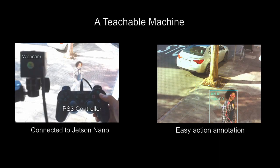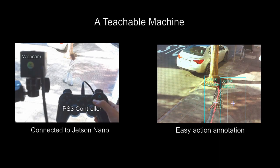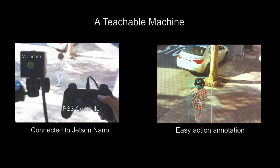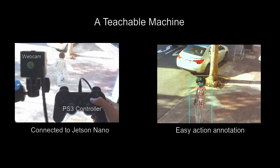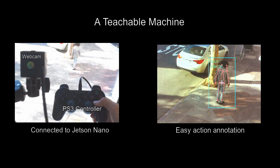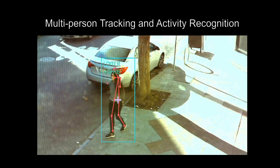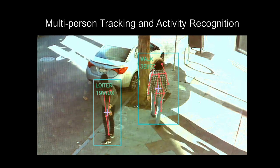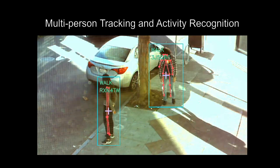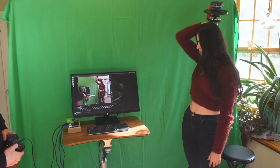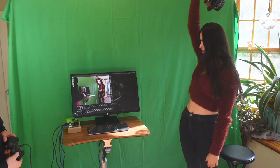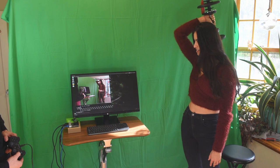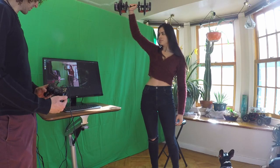More recently we've used the Jetson Nano to make a teachable machine with Action AI. By annotating images from a webcam and training a model in real time, a teachable machine is a fast way to prototype a new model. Here we're training a weightlifting model to recognize four moves: curl, extension, press, and raise.